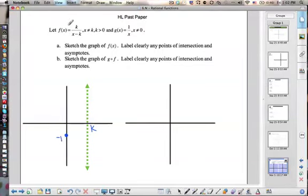And then if I set this equal to 0 and multiply both sides by x minus k, we get 0 equals k. That's impossible, so there is no x-intercept.